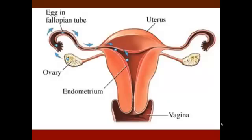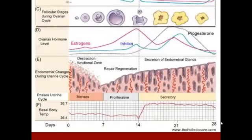Menarche indicates that a girl's body has started ovulating eggs and she is now capable of reproduction. This graph shows changes that happen in a woman's body across her 28-day menstrual cycle. Ovulation happens right in the middle at day 14, with a peak in estrogen at that point. Directly after ovulation, progesterone levels start to increase, and then all of these hormones crash right before menstruation starts at day 28. This is one of the reasons women experience PMS — because of the change in their hormone levels.